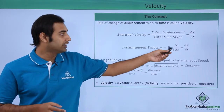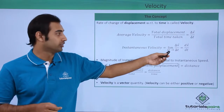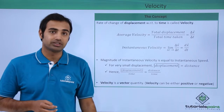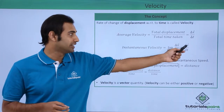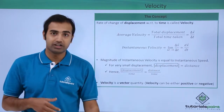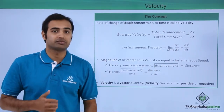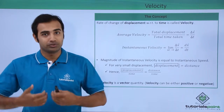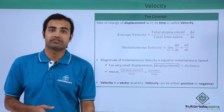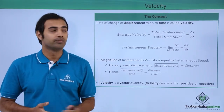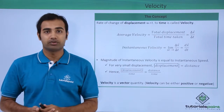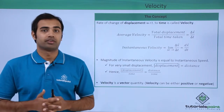So this ratio in the limiting situation will transform itself into dx vector by dt. Here we have a differential of displacement with respect to time. So I can say that instantaneous velocity is simply dx vector by dt. Both these formulae are very very important and you must remember them.